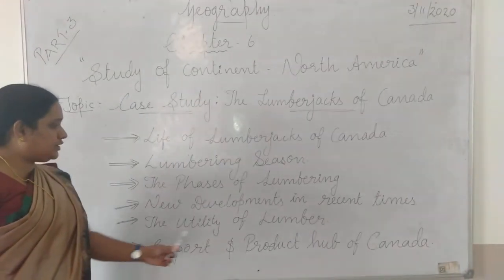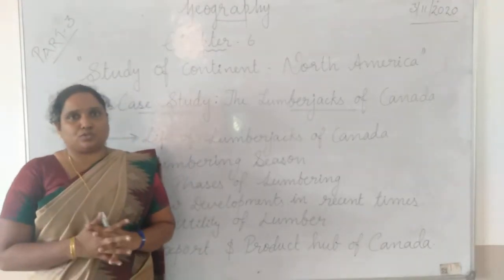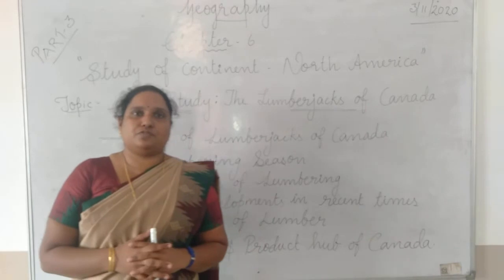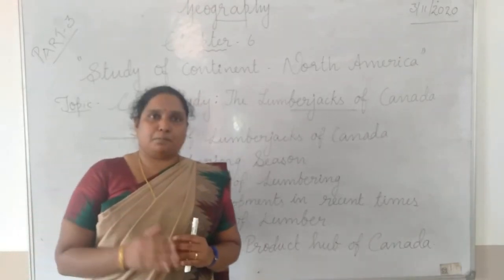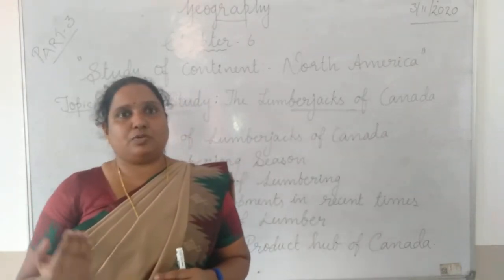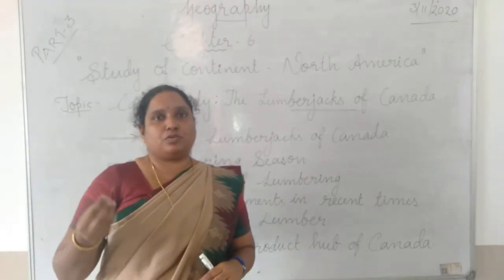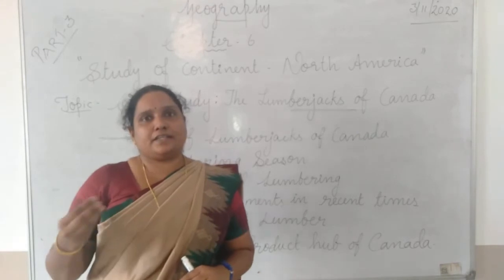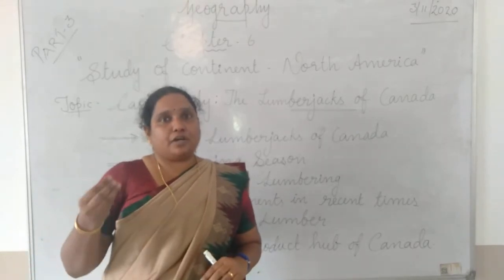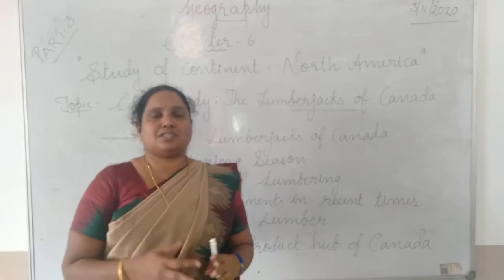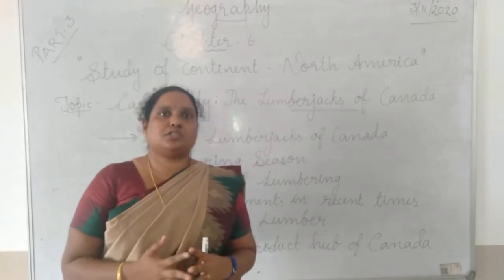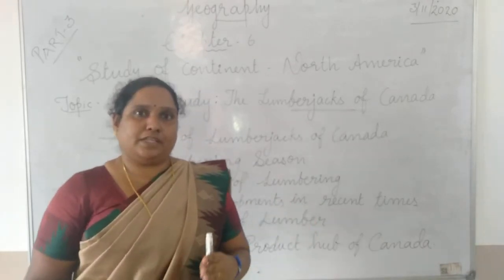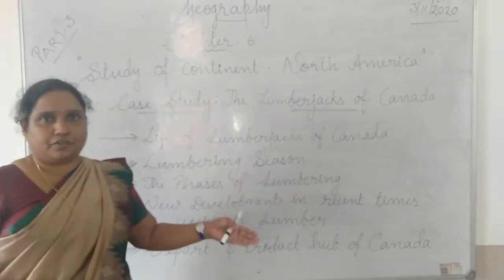The fourth topic is the utility of lumber — the uses of wood. Wood is used in four ways: first, making wood pulp and paper pulp; second, making a particular type of cloth called rayon from wood pulp; third, making paper; and fourth, making furniture. These are the four main uses of lumber, which we will explain in detail in the second part of the video.